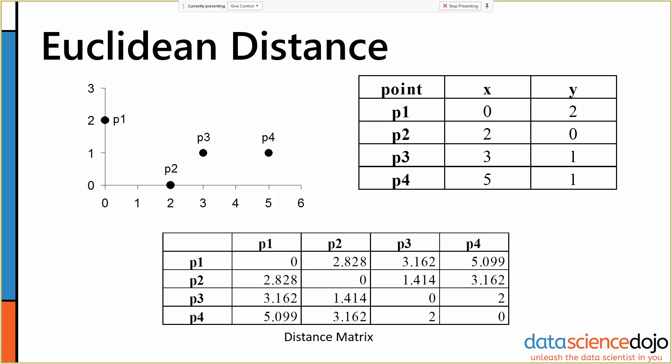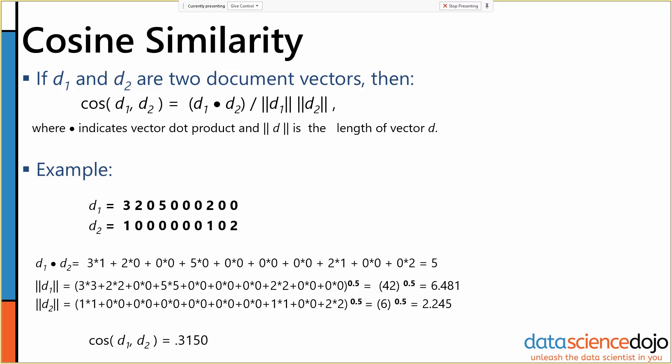So another distance metric that we see particularly in the context of documents is called cosine similarity. So we have documents, we have turned them into term vectors. We can find how similar the documents are. Cosine similarity is a measure of similarity, not of dissimilarity.